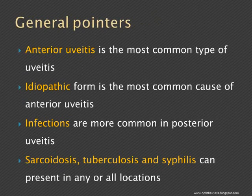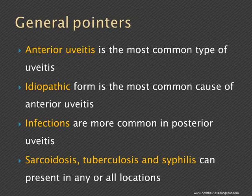Anterior uveitis is the most common type of uveitis, and the idiopathic form is the most common cause of anterior uveitis. Infections are more common in the posterior uveitis group. Sarcoidosis, tuberculosis, and syphilis can present in any or all locations, and hence the investigations when ordered will almost always contain tests to rule out these conditions.